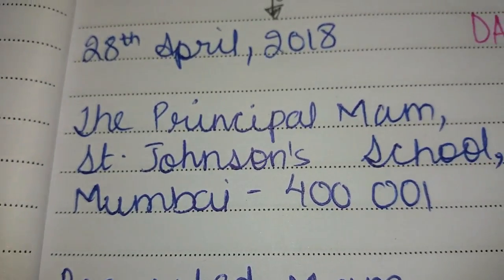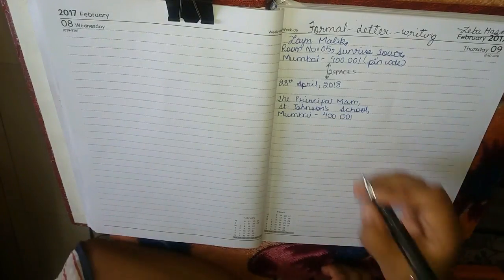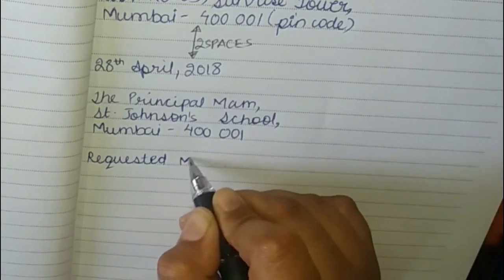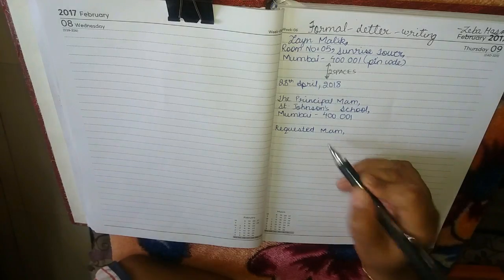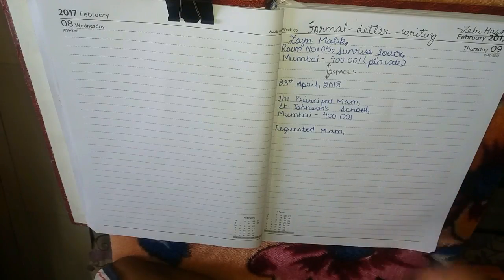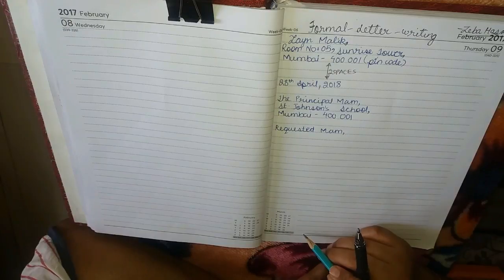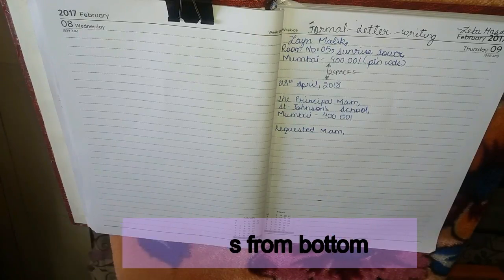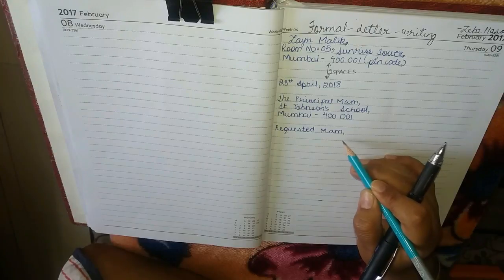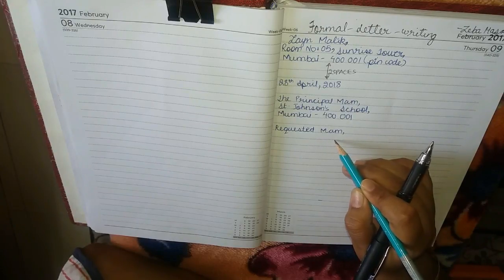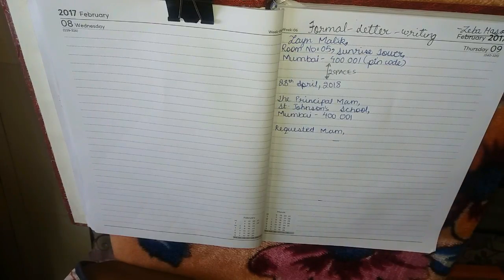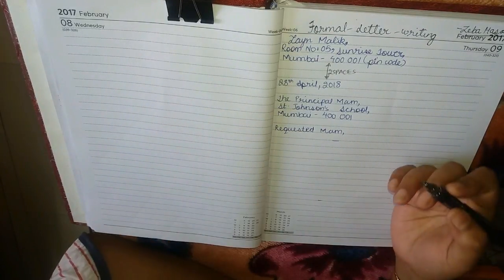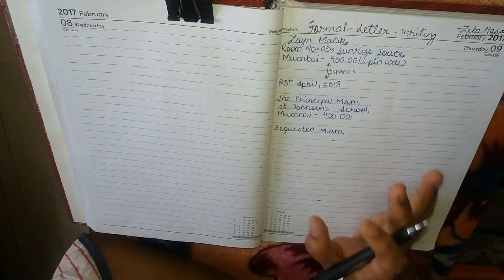So you have written your address and name, left two spaces, written the date, left one space, and addressed your principal and school name. Then leave one space and write the salutation: 'Respected Ma'am.' Leave one more space after that. Also, count seven lines from the bottom of your page — your letter content must fit within that space.